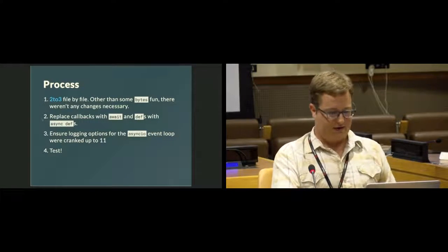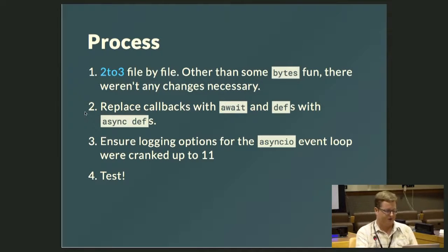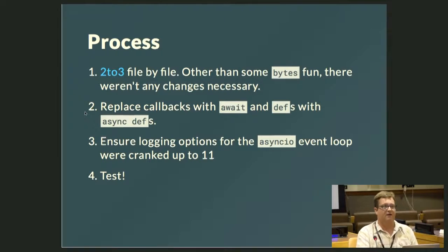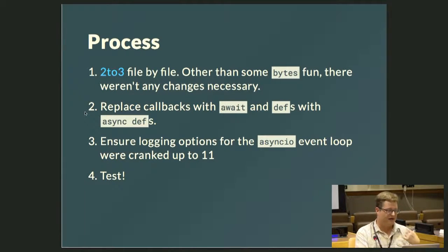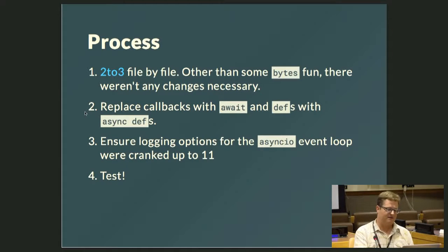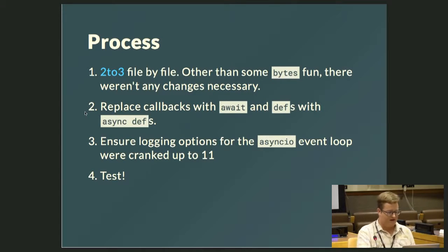The process I took: I used the 2to3 conversion file by file, and it turned out that everything was already Python 3 compatible except for some fun with bytes when it came down to the actual UDP data exchange. I replaced some callbacks with awaits and defs with async defs, then turned on some awesome logging options in asyncIO, and then tested.